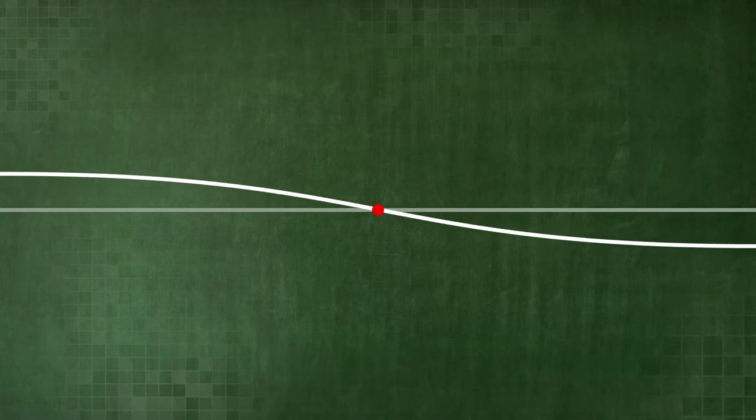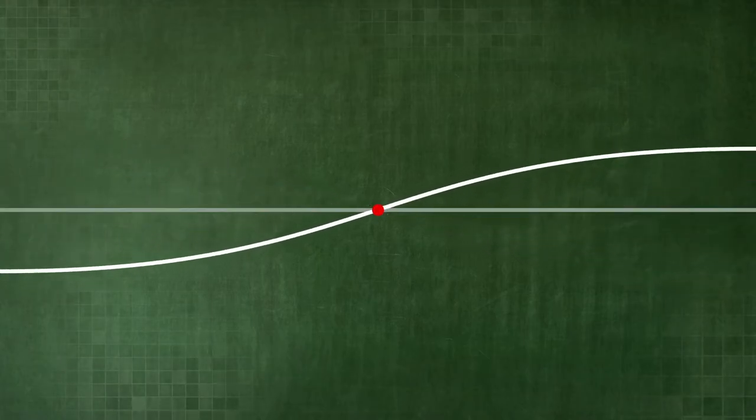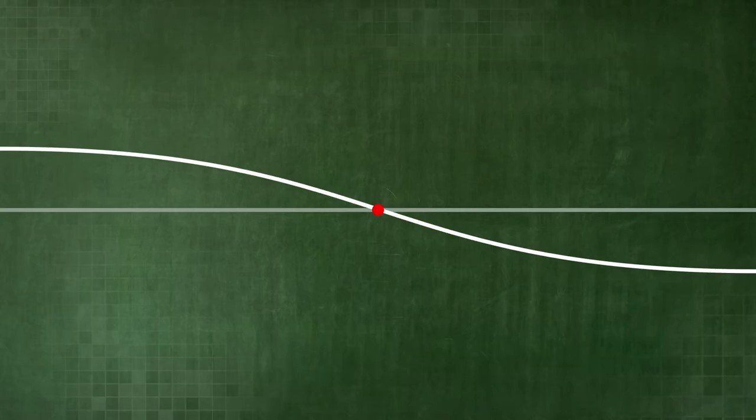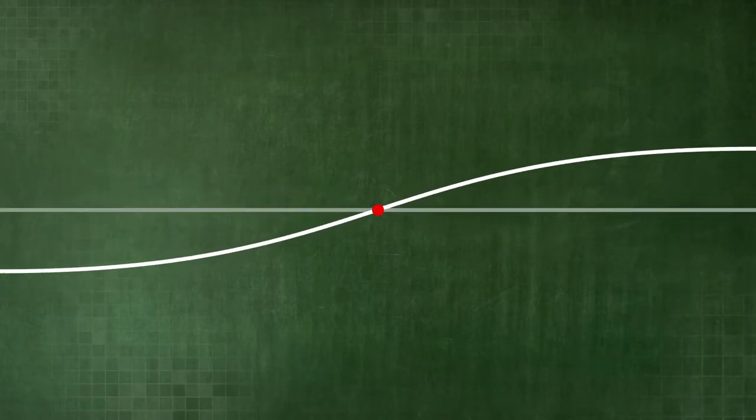Let us consider the simplest mode of vibration having two open ends. It has one node in the middle and one antinode at each of the two edges.